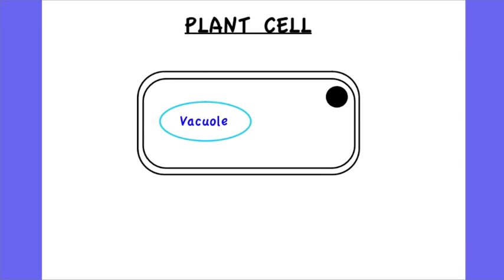So the IB wants you to know about two extracellular components, and they specify one in a plant cell and one in an animal cell. So if we start with that in the plant cell,